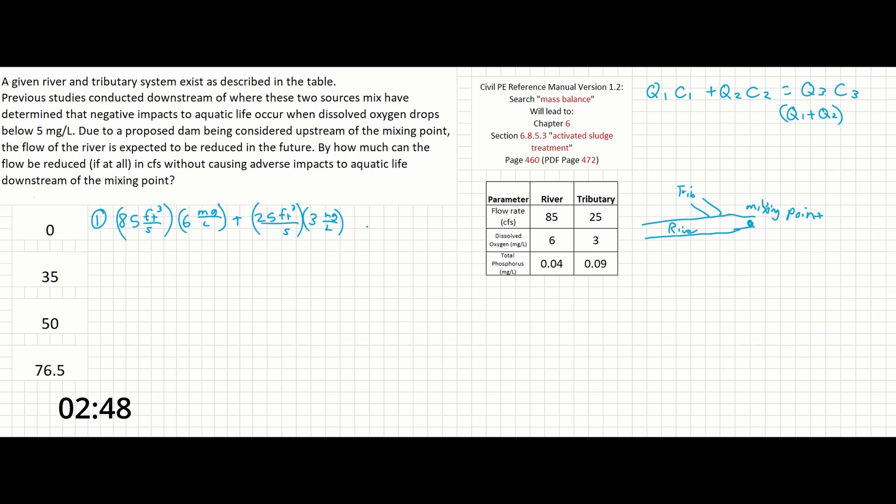Equals the sum of these two together is going to be 110 cubic feet per second times whatever the concentration currently is downstream.